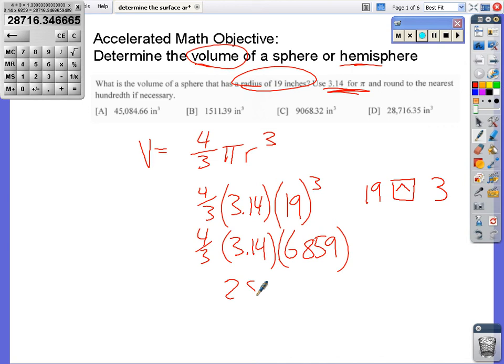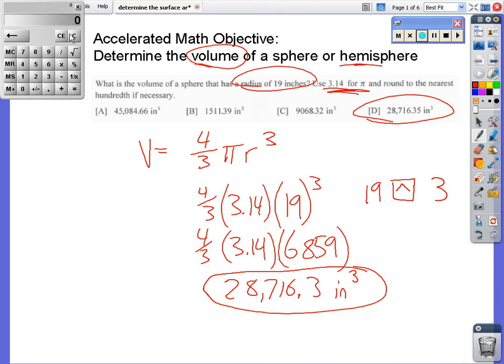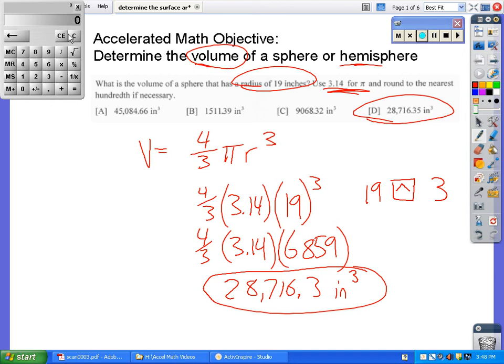And I get 28,716.3. I'm going to round it off there. This is in inches, and it's a cubic measurement because that's what volume is. So 28,716.35, a little bit of rounding difference probably because of my calculator. All right, let's move on to the next one.